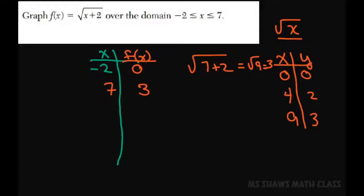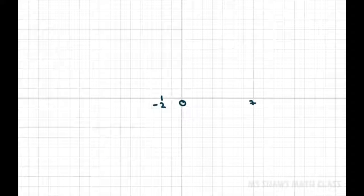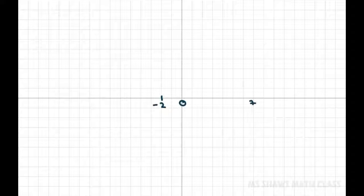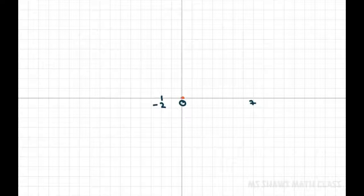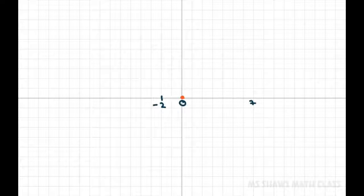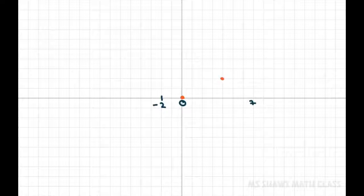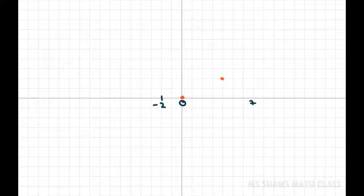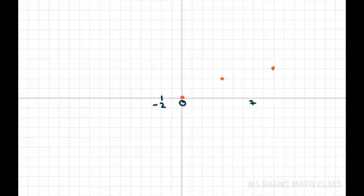So what I'm going to do is graph both of these. For the parent function, I know that square root of 0 is 0. Square root of 4 is 2. And the square root of 9 is 3. So it looks like this.